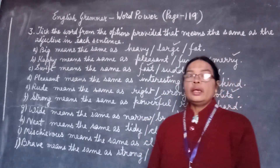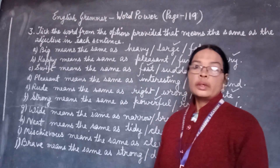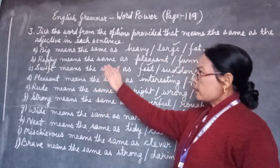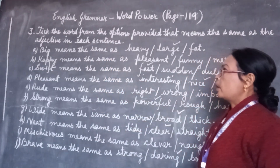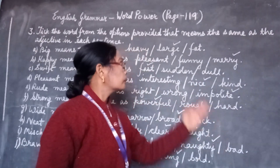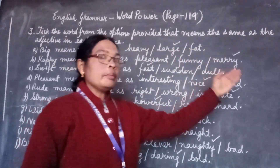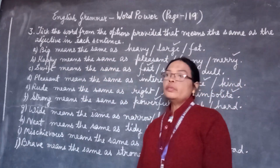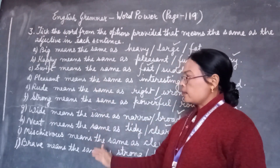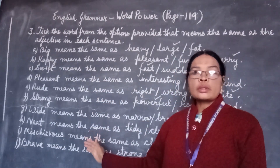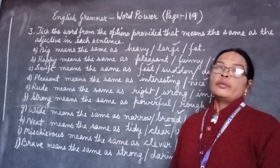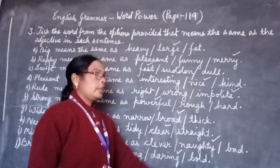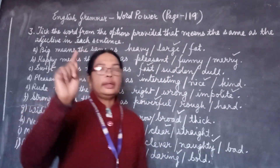In exercise number 3, we have to take the word from the options provided that means the same as the adjective in each sentence. In each sentence some adjectives are there, and those adjective meanings are also included. From those meanings, we have to search the correct meaning and put a tick mark on it.